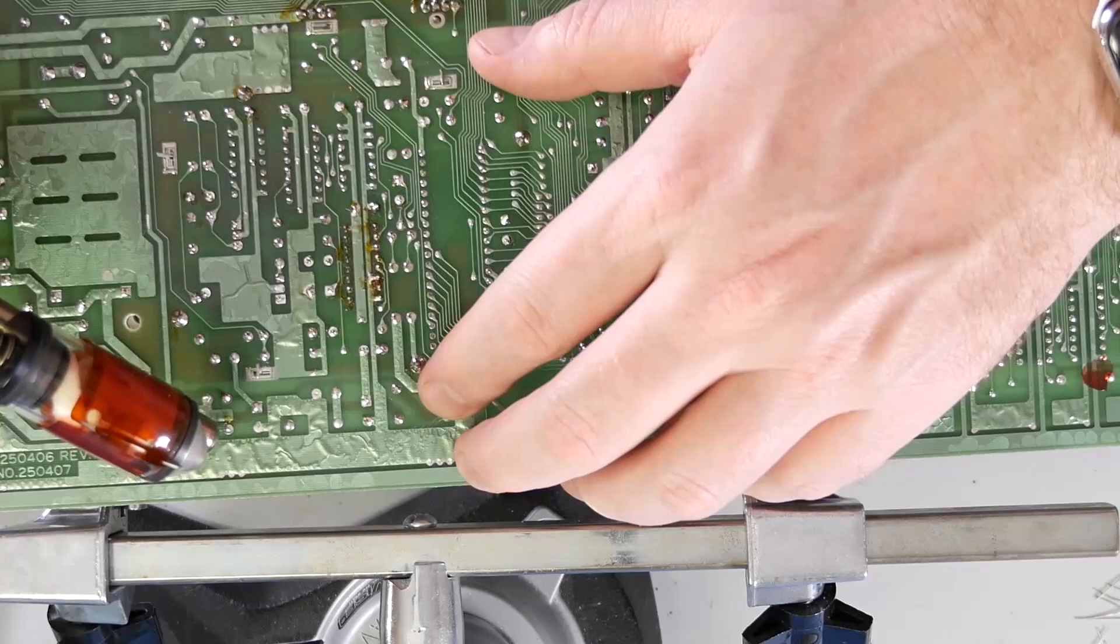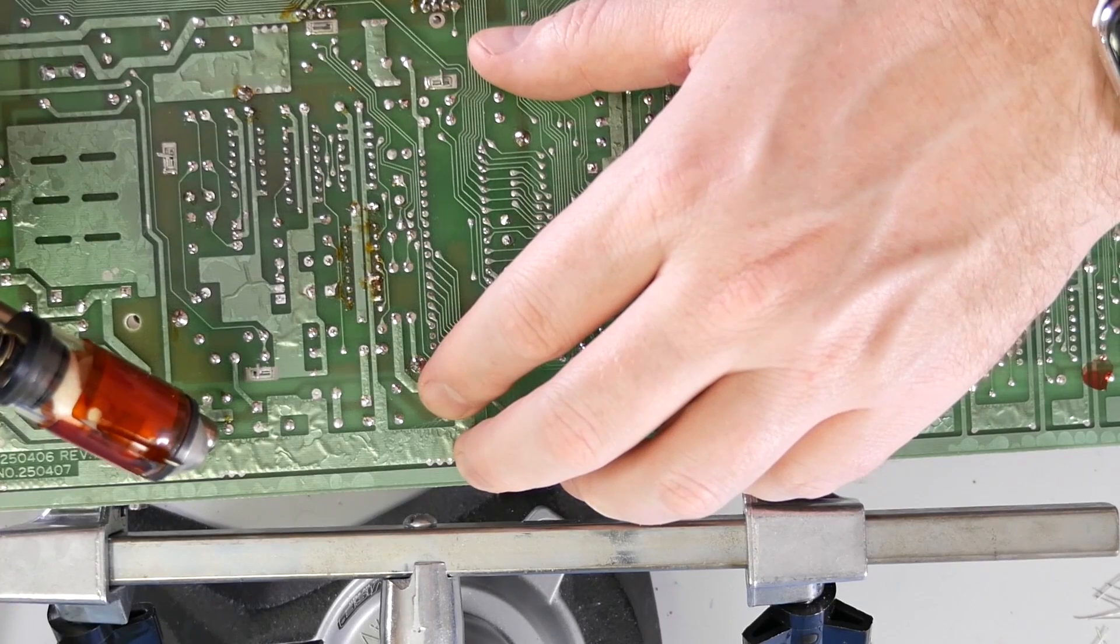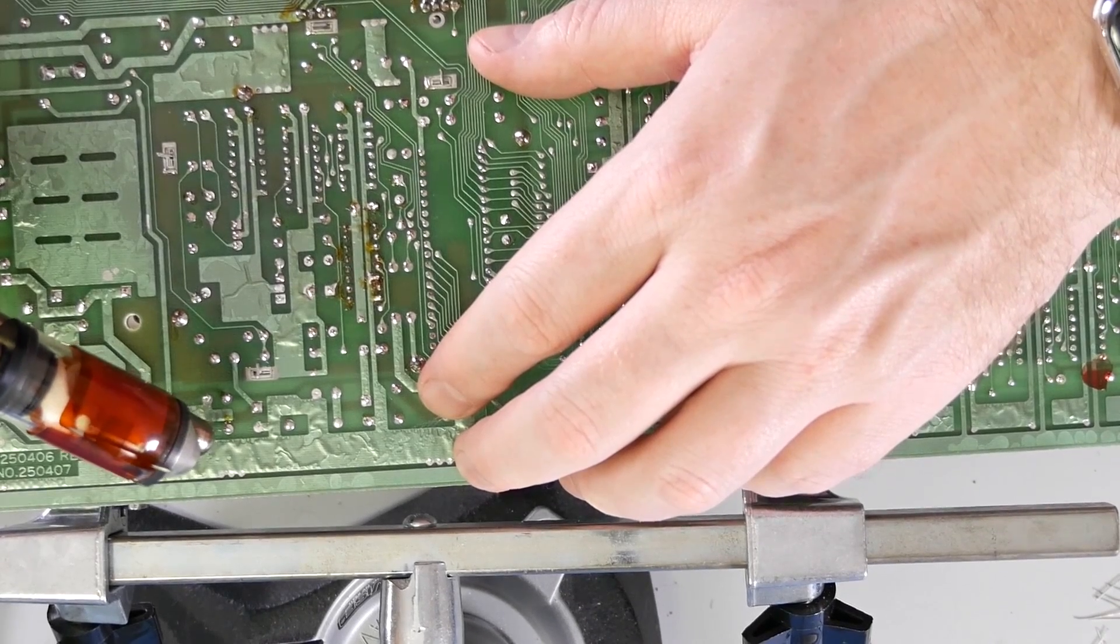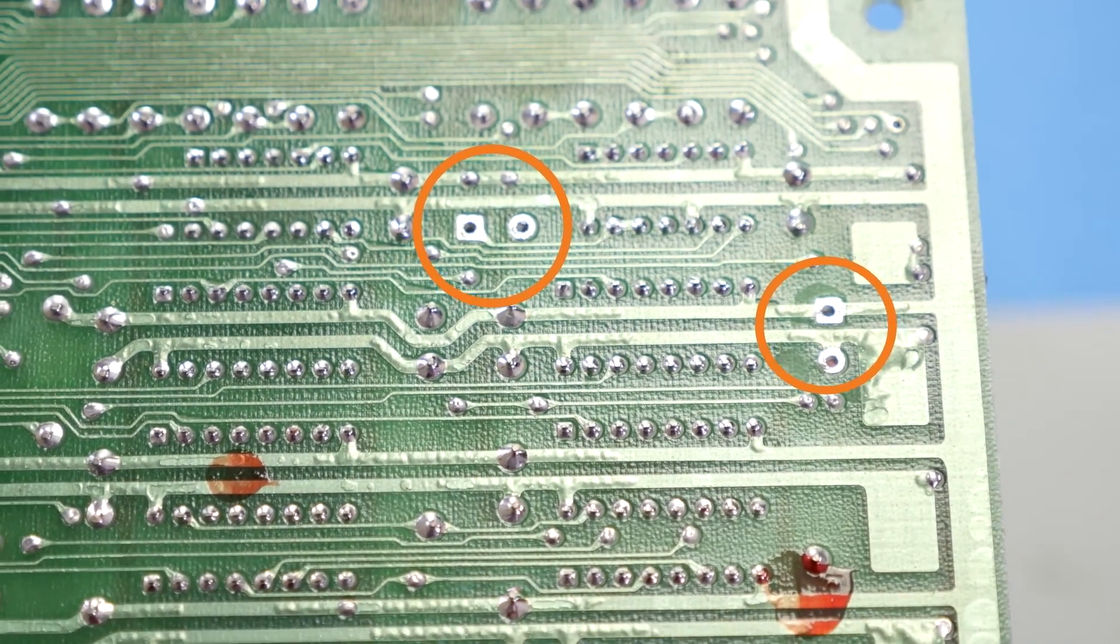Once I see the solder joint melt, I press the button and then the vacuum runs for 5 seconds. Not only does this mean that you get consistent results, but it also makes the job go much quicker.